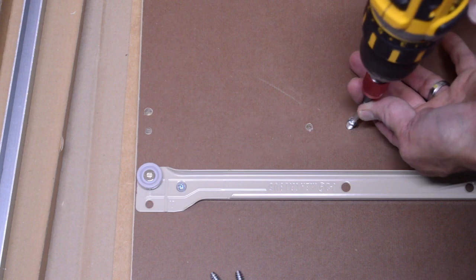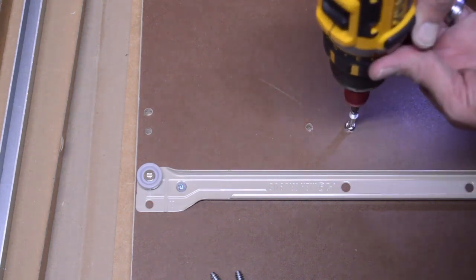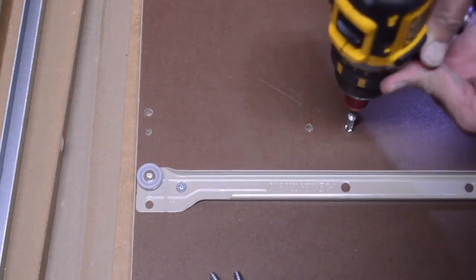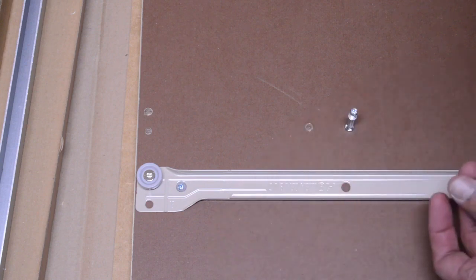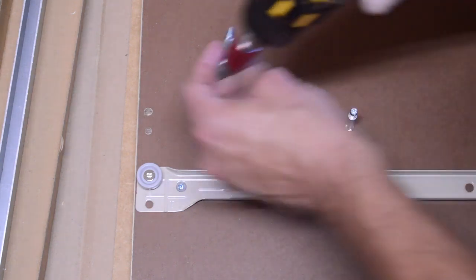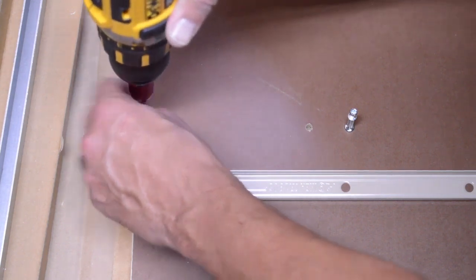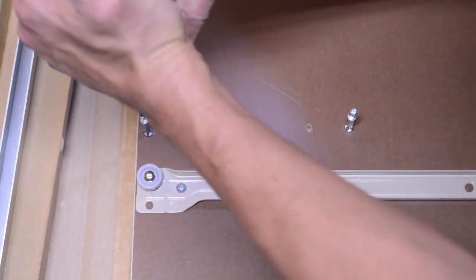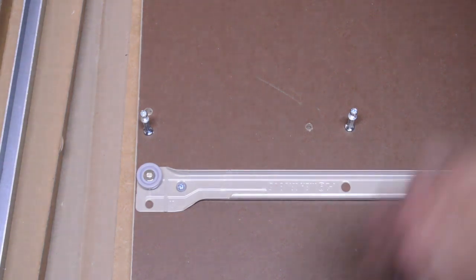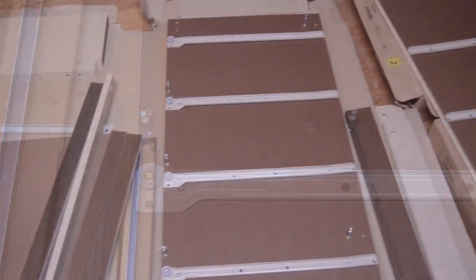Basically there are several of these little studs that, you know, basically mount everything together with a little cam lock piece. And this is the majority of how everything with the Ikea stuff in general is put together. So you're going to be putting a lot of those in.